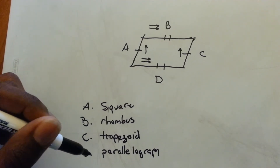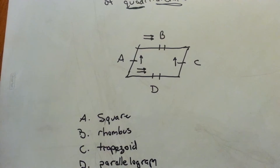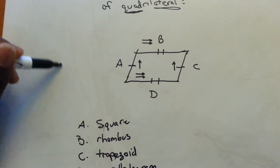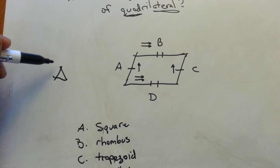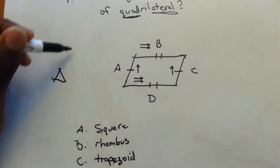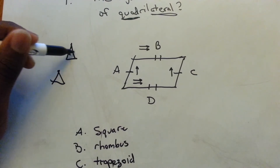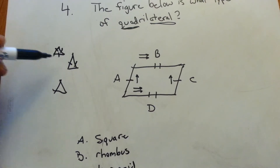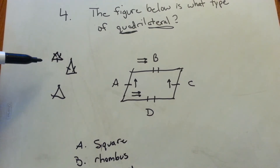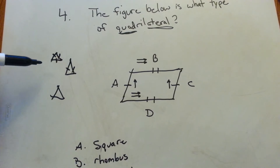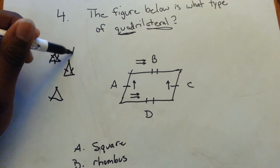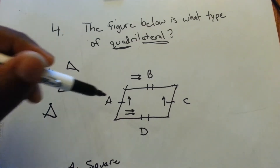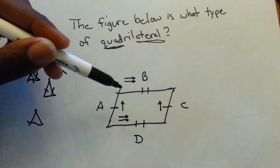They're all different kinds of four-sided shapes — similar to how triangles all have three sides, but there are isosceles triangles where two sides are the same, equilateral triangles where all three sides are the same, and scalene triangles where none of the sides are the same.